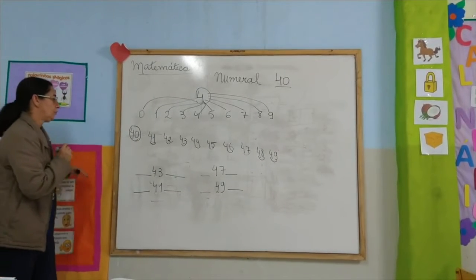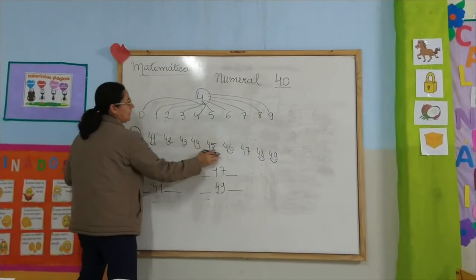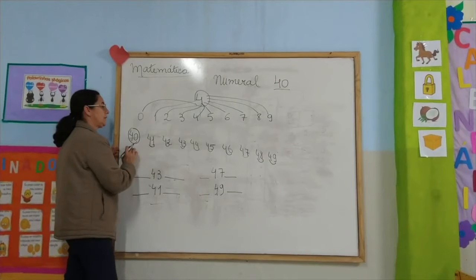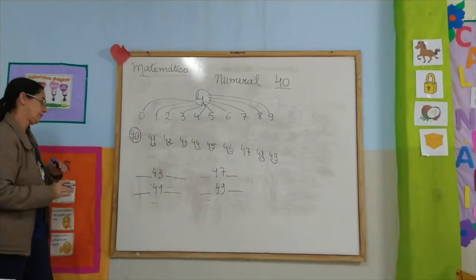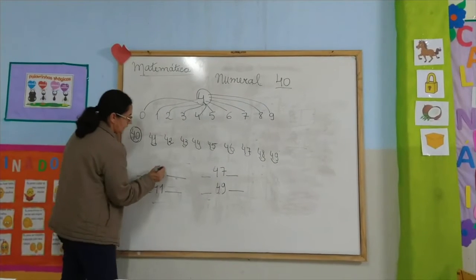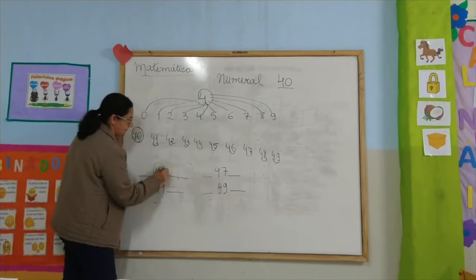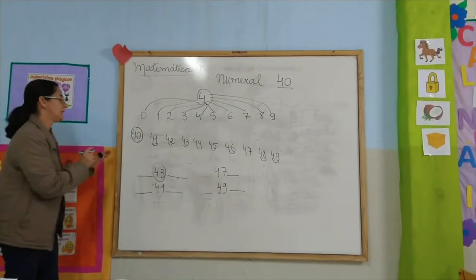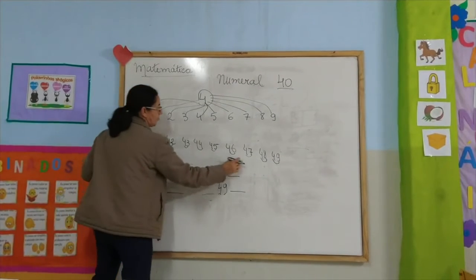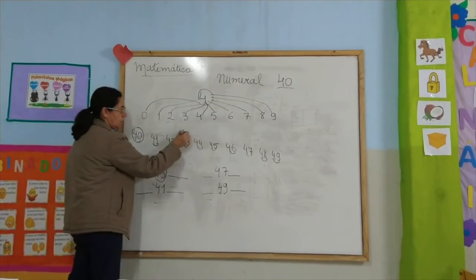Vamos lá. Todo número ele tem o vizinho, um mora antes e o outro mora depois. Aqui eu tenho o numeral 43, vamos colocar ele aqui na sequência.